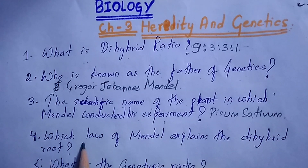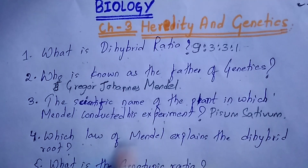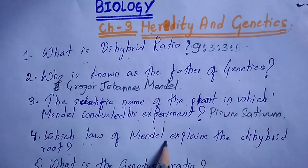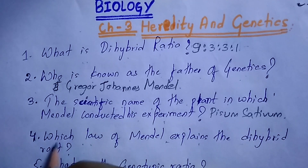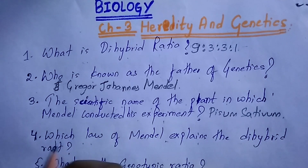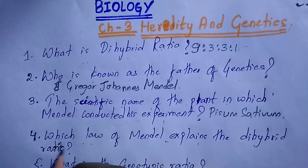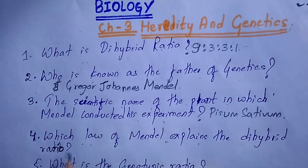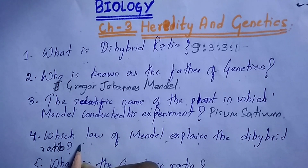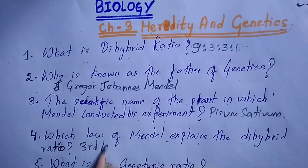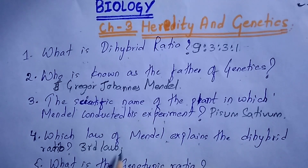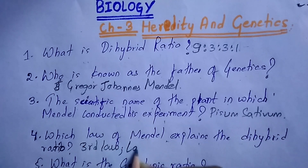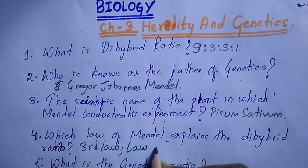Next question: which law of Mendel explains the dihybrid ratio? It is Mendel's third law, and the name of the law is the Law of Independent Assortment.